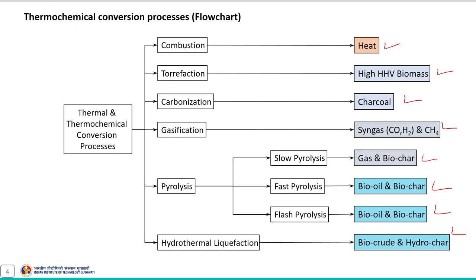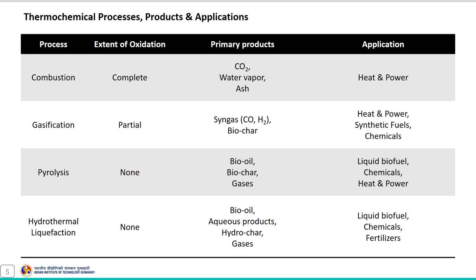Among these thermochemical conversion processes, torrefaction and carbonization were already discussed in the previous module. In this module, the main focus is on combustion, gasification, pyrolysis and hydrothermal liquefaction. This table provides details of these four thermochemical conversion processes, including the oxidizing medium used, their primary products and applications.